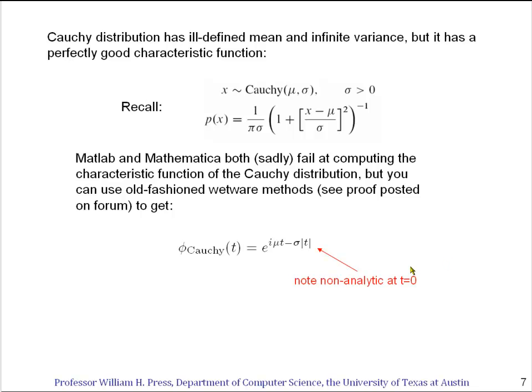Well, do you remember that the derivative of the characteristic function was a moment, and the second derivative was a second moment? Now we see how you can have a characteristic function but not have moments. It's because there has to be a non-analyticity at t equals zero to prevent those moments from existing. So it all works out.